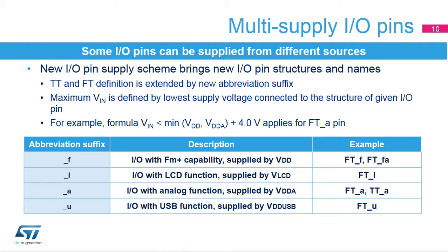A new multi-supply scheme of I/O pins brings new I/O pin structures. Previously used naming FT and TT has been extended by abbreviation suffixes to highlight alternate supply sources for each FT and TT I/O pin. The previously used name FTF for FM-plus capable pins has been transformed to FT_F. The new underscore L suffix marks pins supplied through LCD supply; underscore A marks pins supplied by analog supply; underscore U is used for pins supplied from USB supply; and underscore S identifies pins within the independent VDDIO2 supply domain. The absolute maximum rating for each I/O pin is defined by the lowest voltage of the supplies listed for each I/O pin.